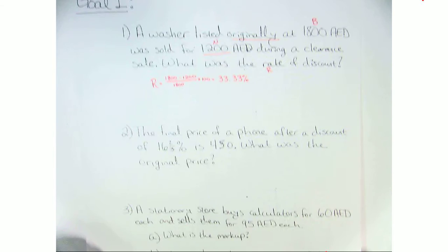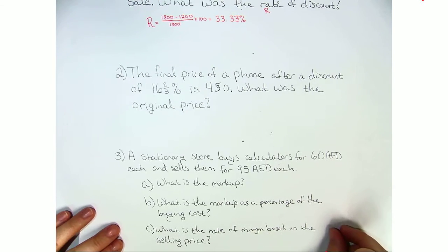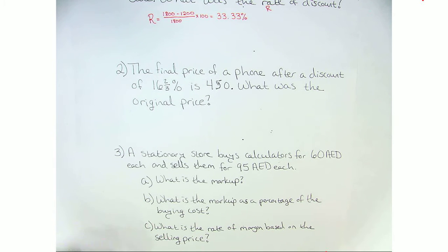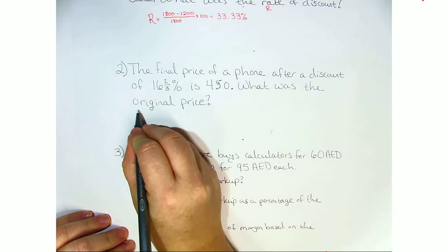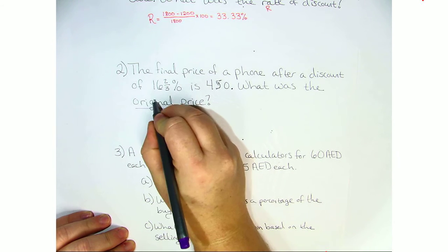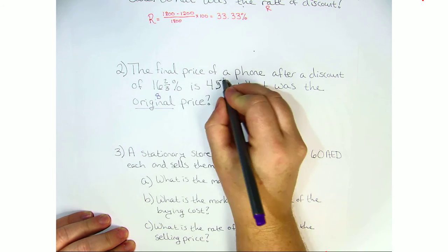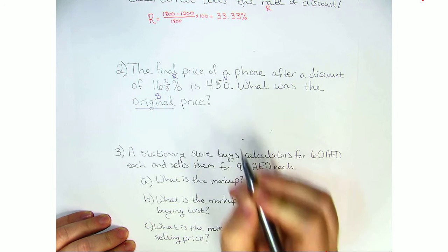Now moving on to question 2. The final price of a phone after a discount of 16 and two thirds percent is 450. What was the original price? So we're looking for B and we're given N and R.